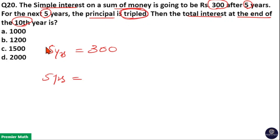And number of years and rate are same means, simple interest also tripled. That is 3 into 300. 900 is the interest for the next 5 years.